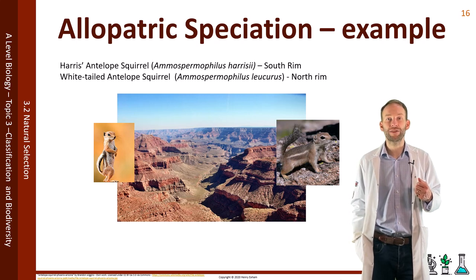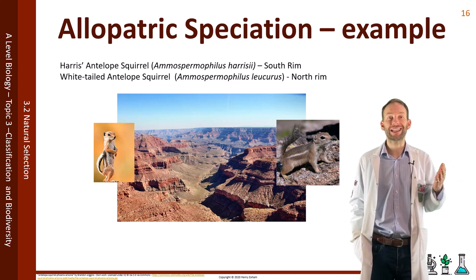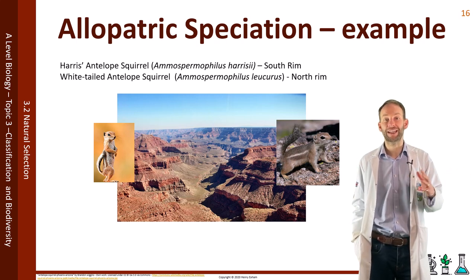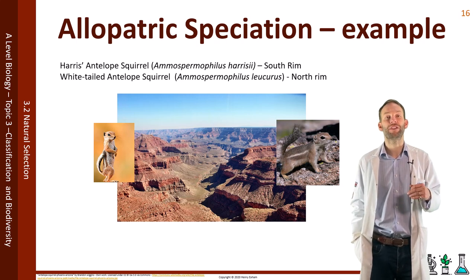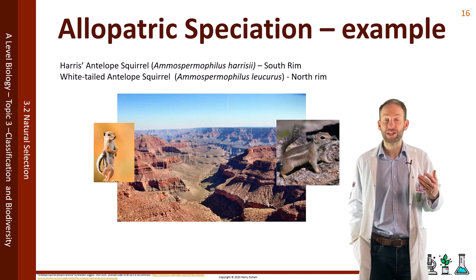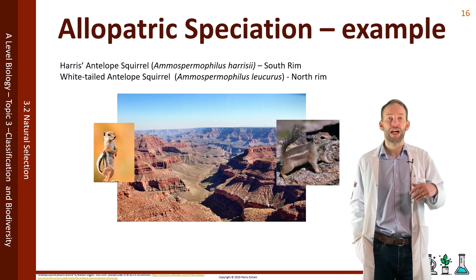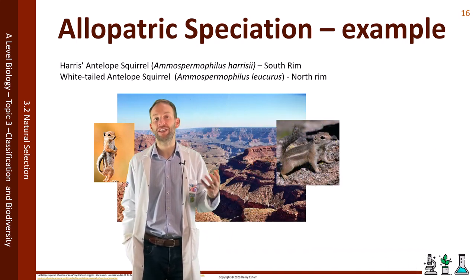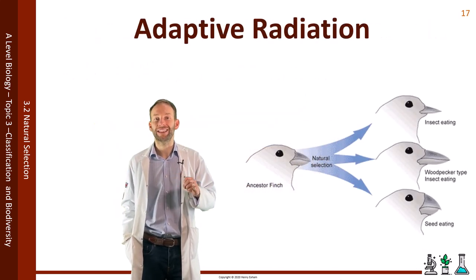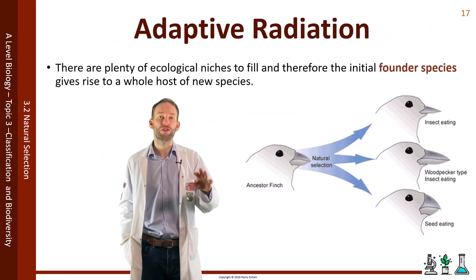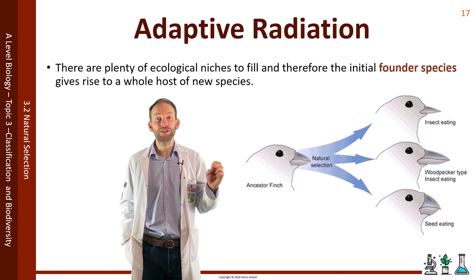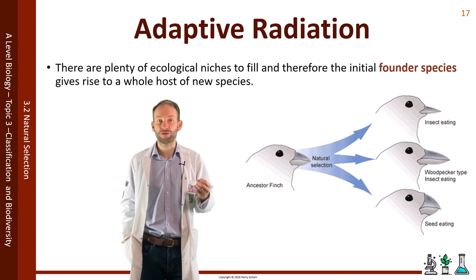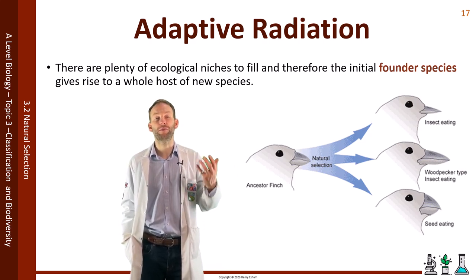An example involves two closely related species of antelope squirrel that live on opposite sides of the Grand Canyon. Harris's antelope squirrel is on the south rim, while the white-tailed antelope squirrel is on the north rim. Birds and other species that can cross the canyon have not diverged in the same way. Allopatric speciation quite often leads to adaptive radiation, where a new species arrives in a geographical location, disperses through the area, and fills the available ecological niches.